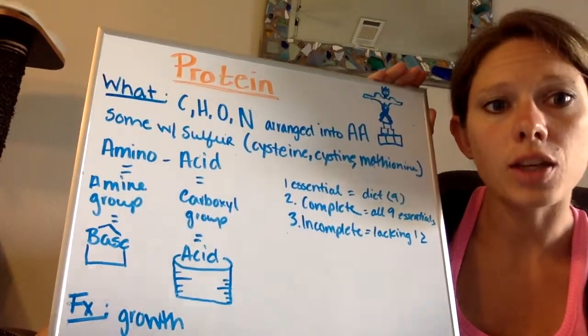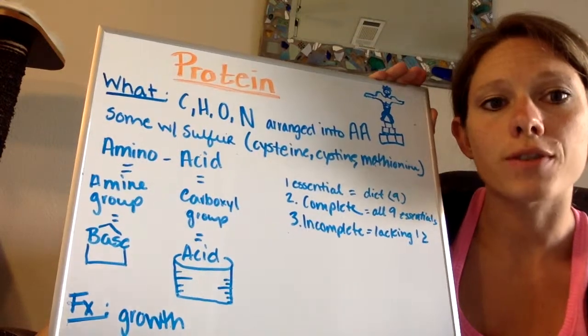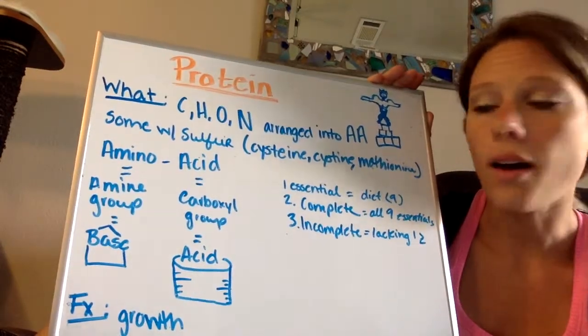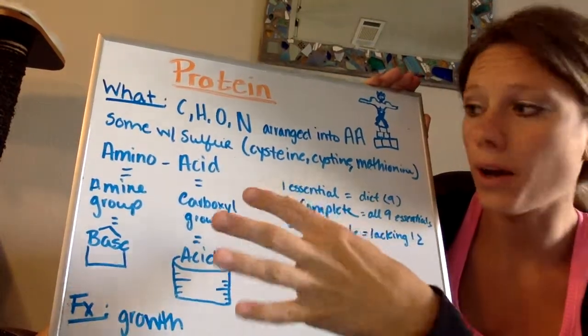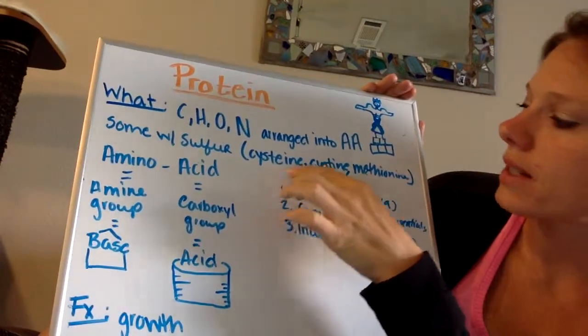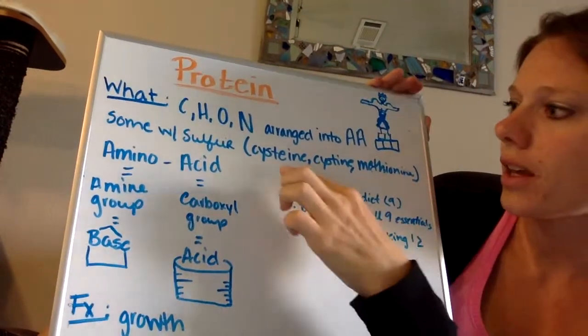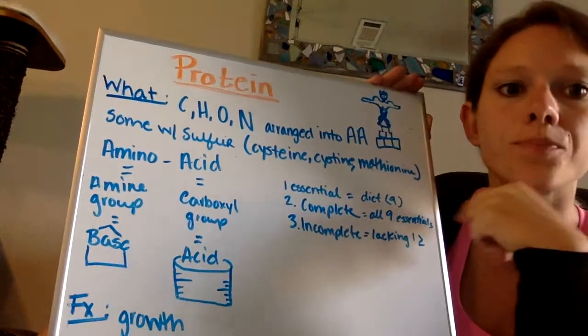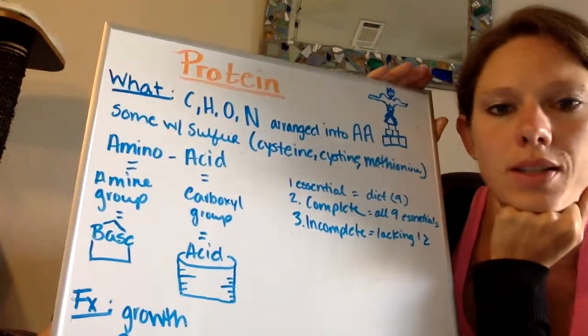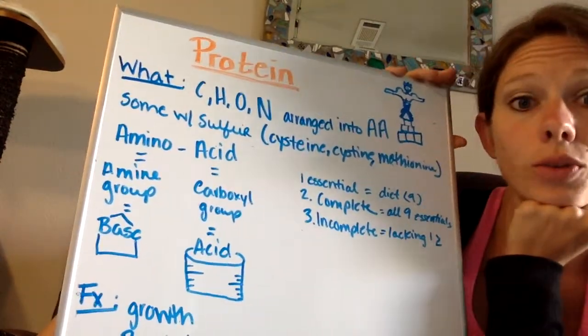There are three that you need to know that do have sulfur as well in their compound and that's going to be cysteine, cysteine with an E in there, and methionine. So those are some amino acids that are a little bit special if they have that sulfur group in there.